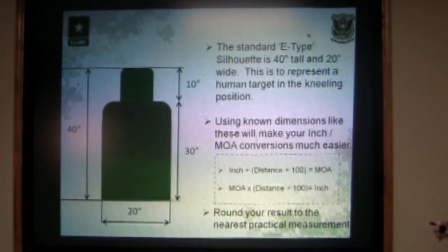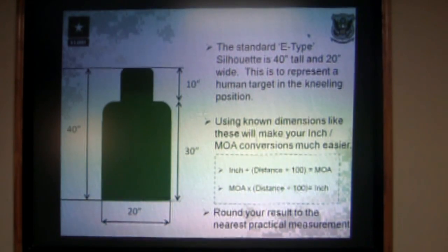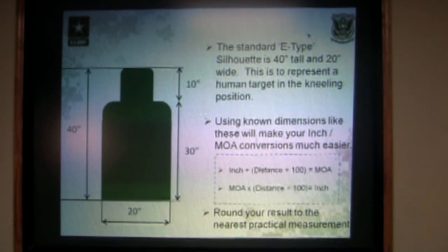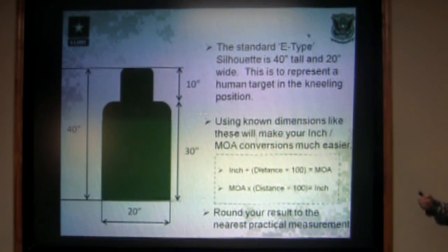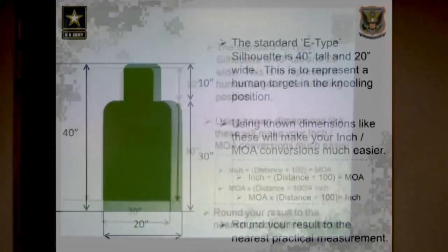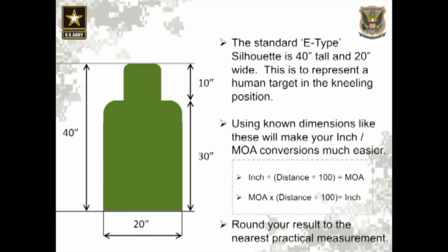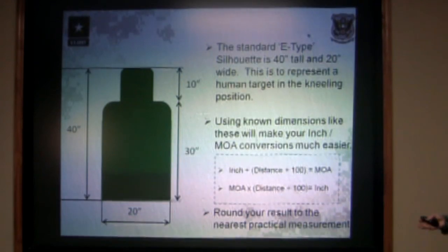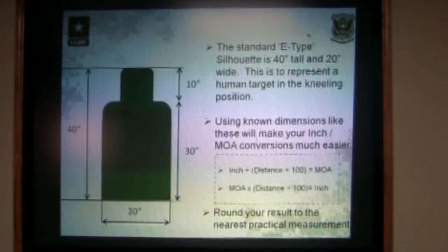So if you're at 100 meters, you do your inches times the one of your 100 meters and it gives you the minutes of angle on target. To get your inches, you take your number of minutes of angle, multiply that by the first number of your distance, and it gives you the number of inches you need to move on target or how far you are off the center of target. Round to the nearest whole number to make sight manipulation easier.